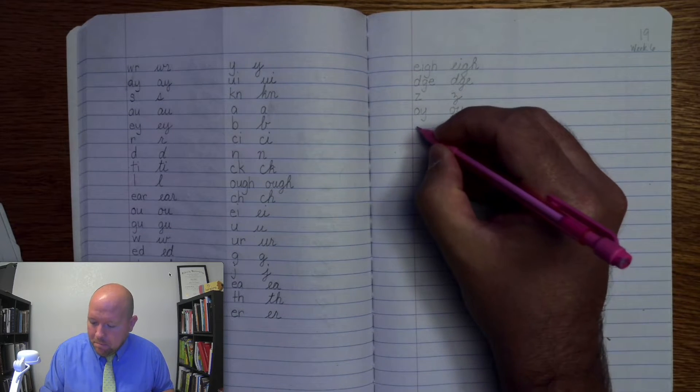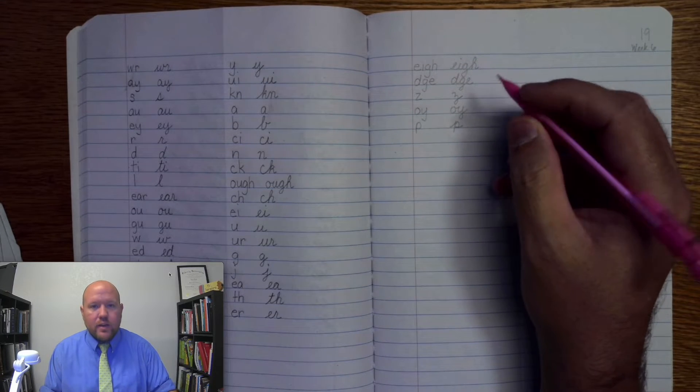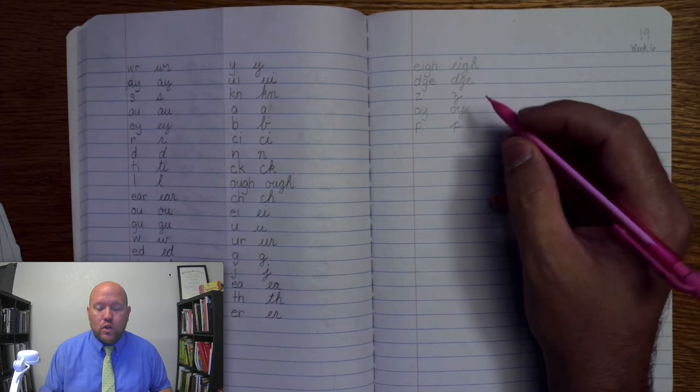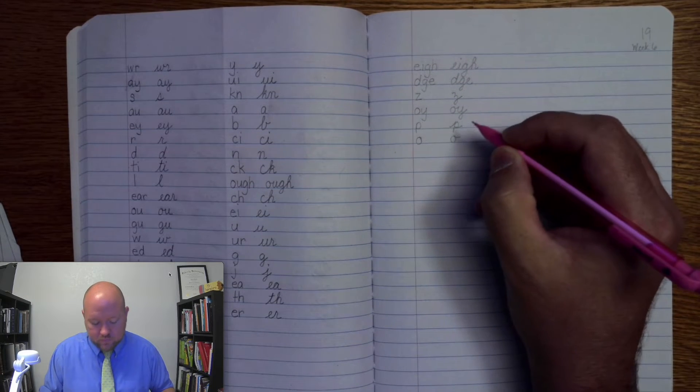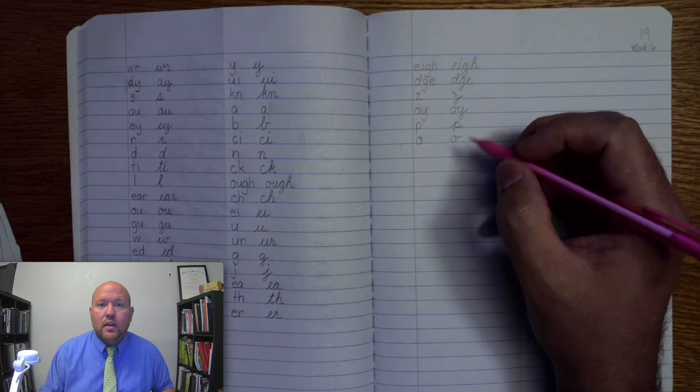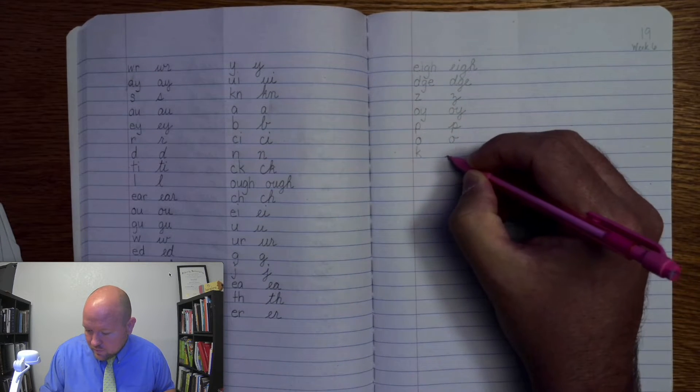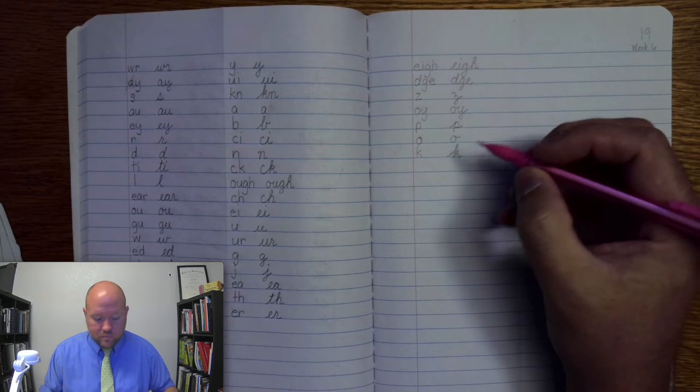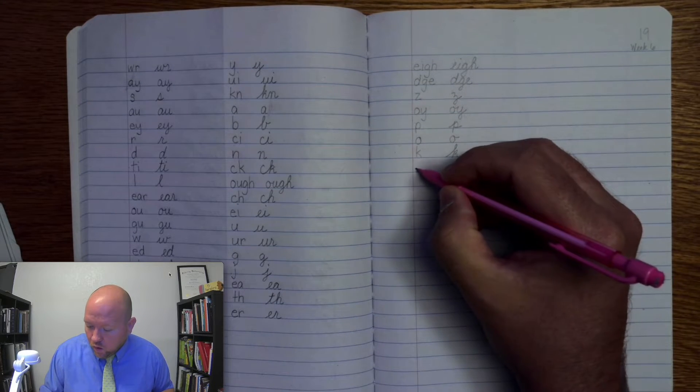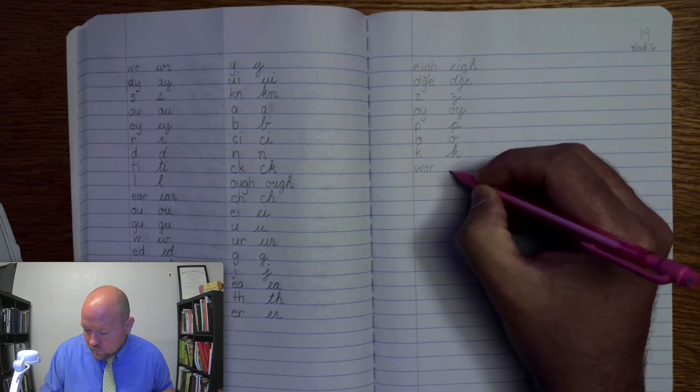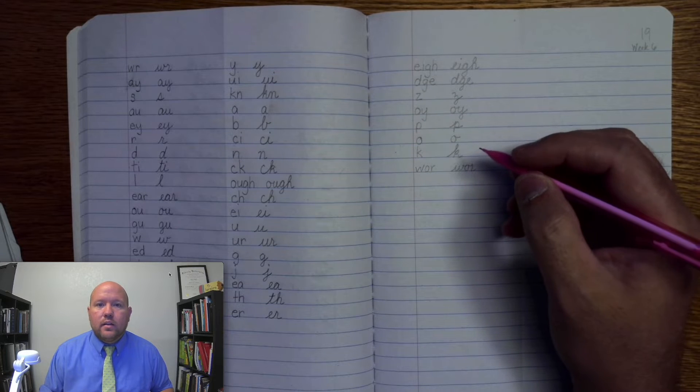Next one: P, P. Next one: Ah, OI, OI. Next one: K. Next one: Wer, Wer. Next one: N.